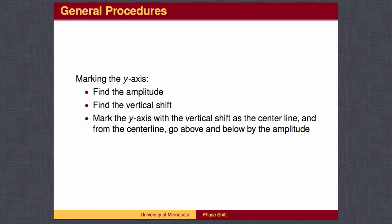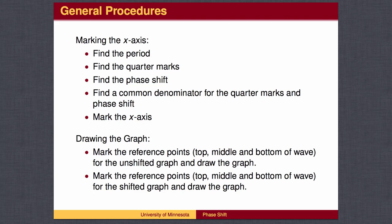Let's review the process for drawing sine and cosine waves. First, mark the y-axis: d determines the vertical shift, which is where we place the center line; from the center line, go up and down according to the amplitude. Then mark the x-axis: find the period 2 pi over b, divide by 4 to get the quarter marks, and find the phase shift by setting the angle equal to 0 and solving for x. Next, find a common denominator between the quarter marks and the phase shift, mark the x-axis evenly, mark the reference points for the unshifted graph, and then use the phase shift to move the graph left or right.